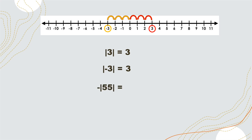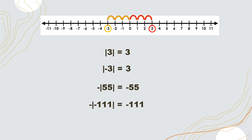We have the negative absolute value of 55. When we get the absolute value of 55, that is positive 55. But there is a negative sign on the outside, so therefore this is negative 55. Remember, the absolute value of negative 55 is different from the negative absolute value of 55 — what is inside the absolute value here is positive 55. Next, we have the negative absolute value of negative 111. Negative 111 is what's inside the absolute value, so it becomes positive, and the answer is negative 111.